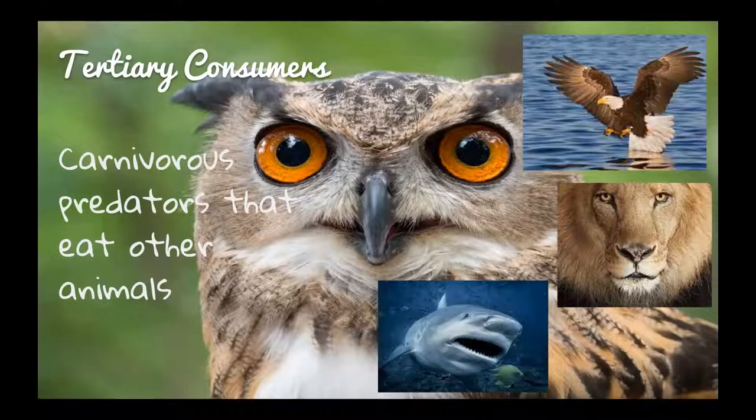Then we have our tertiary consumers. These are the animals you think of as predators — carnivorous predators that eat other animals that eat other animals. These are the animals at the top of the food chain: sharks, lions, eagles, and owls. These are tertiary, or third, consumers.